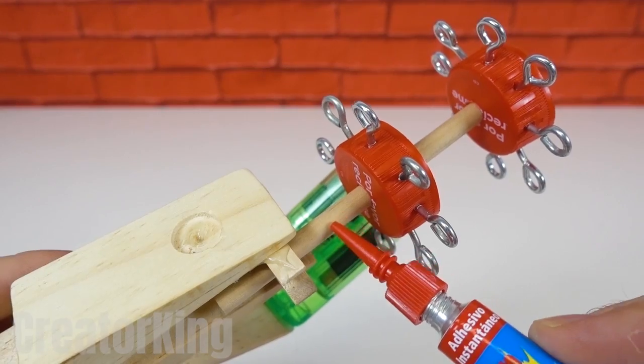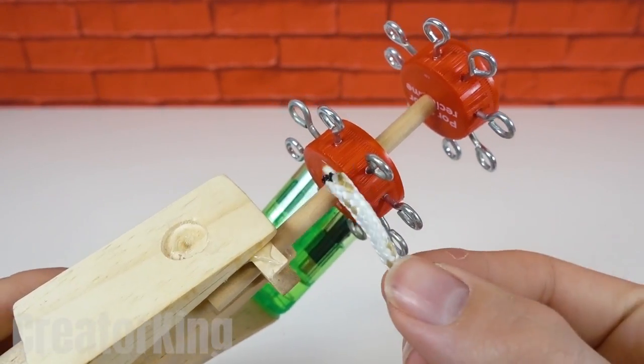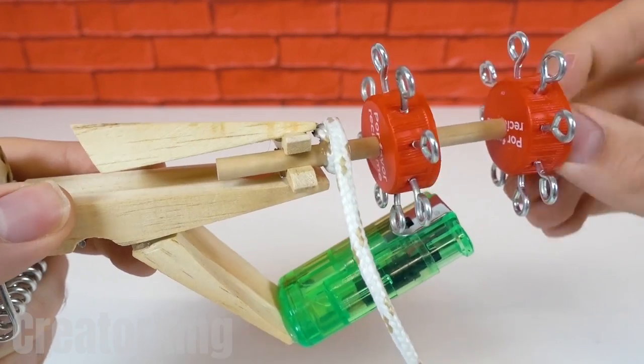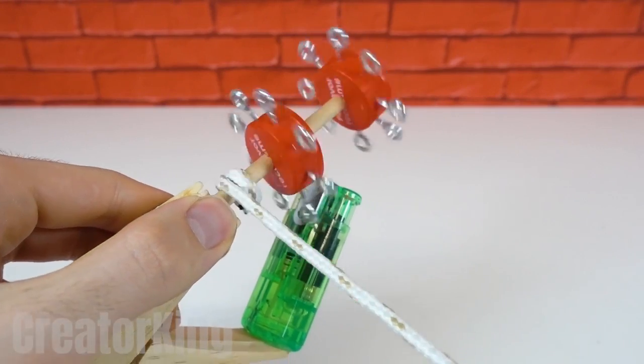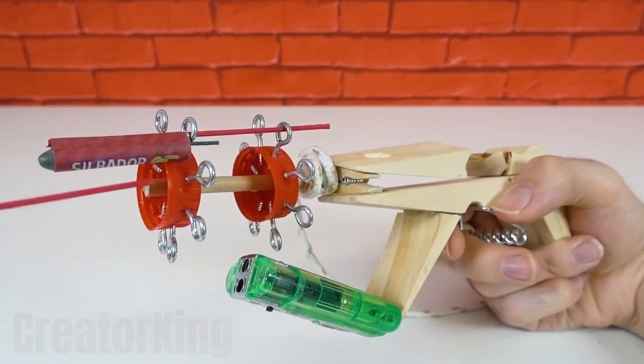Look for some rope, if it has a design even better. You know, for aesthetics. Cut a piece and glue one end to the swivel stick. Load our eight silvadoras.